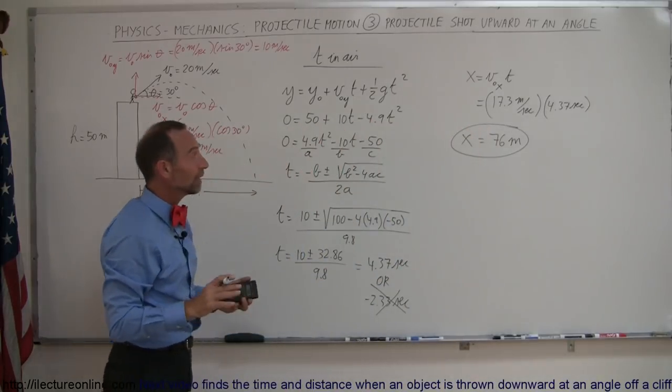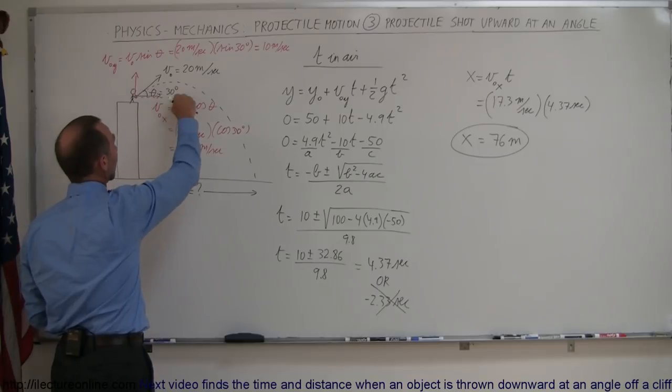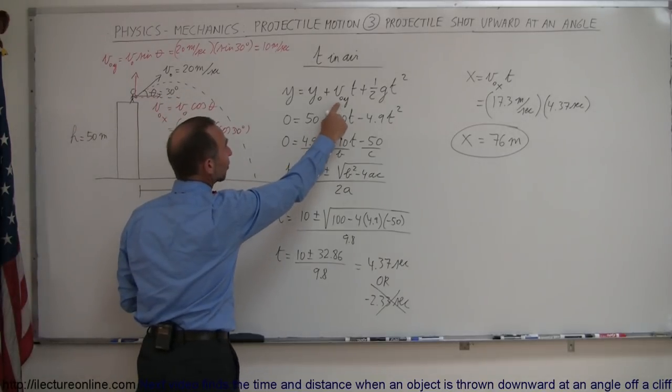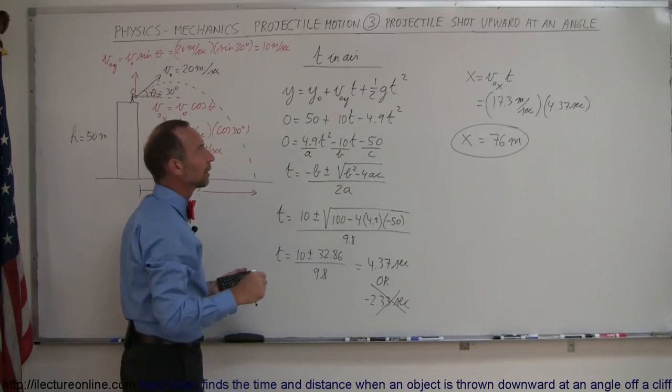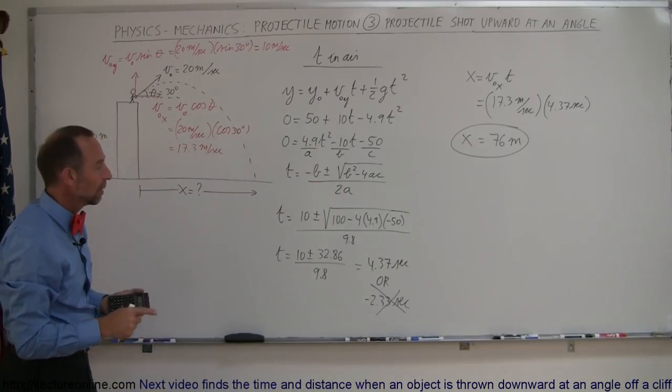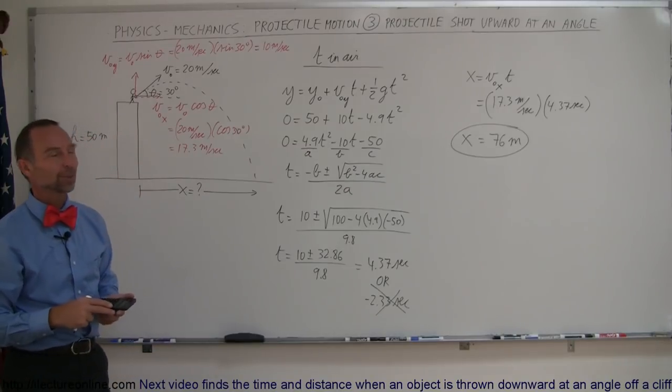And that's how you do that. So the only difference between this problem and the previous problem, where the object was shot horizontally, we now also have some initial velocity in the y direction. So we get a little bit more complicated quadratic equation to solve before we find time in the air. And that's how you do this problem.